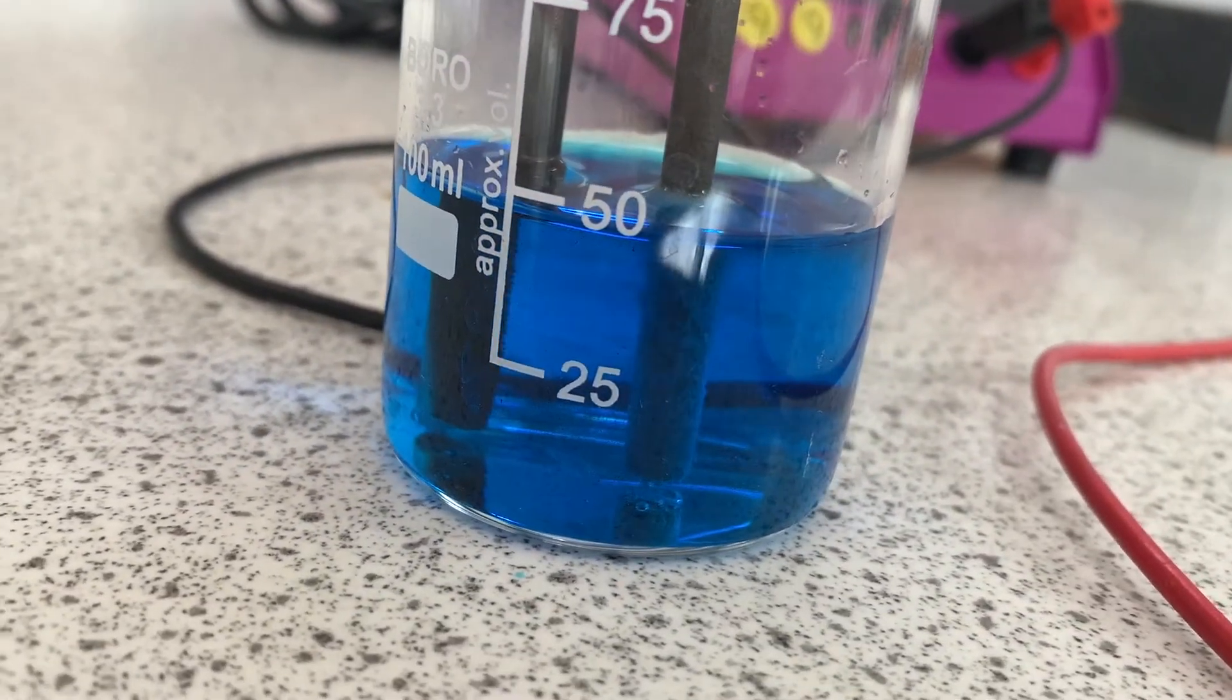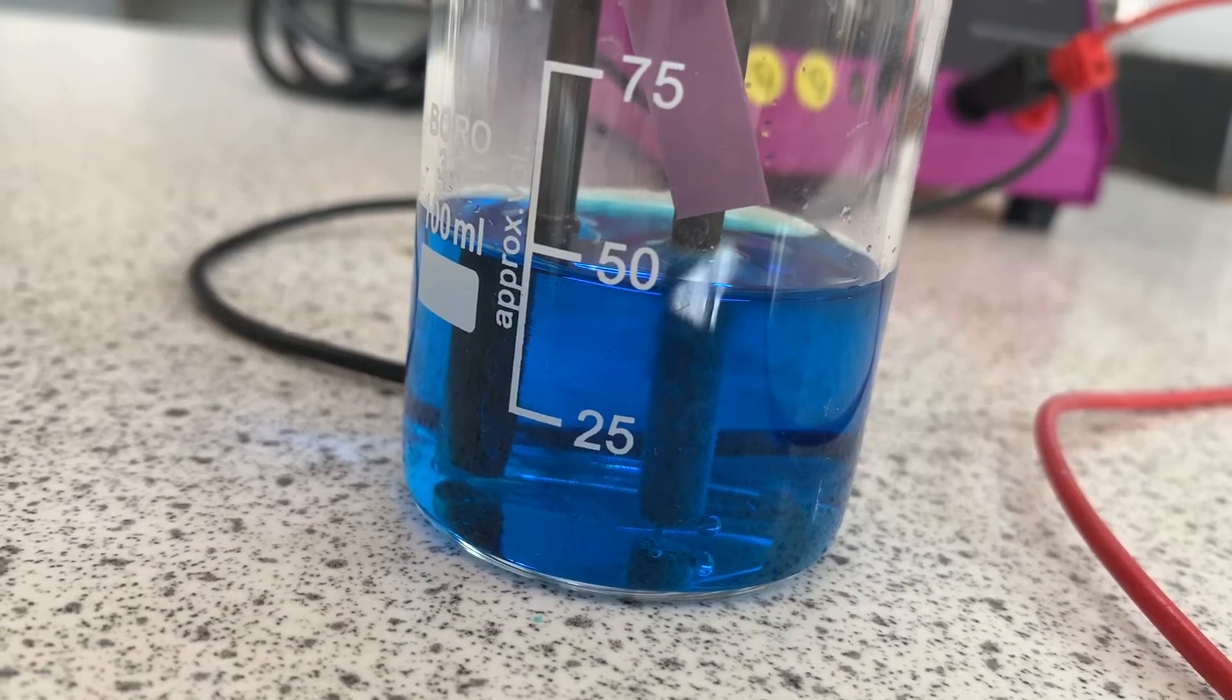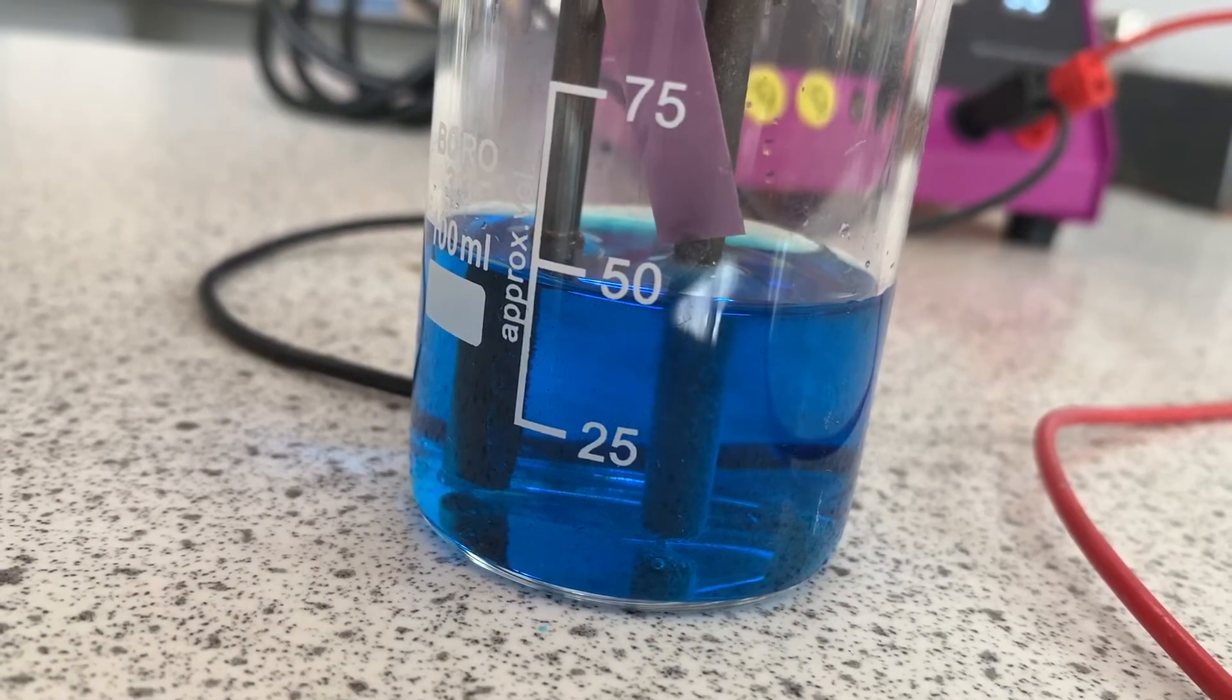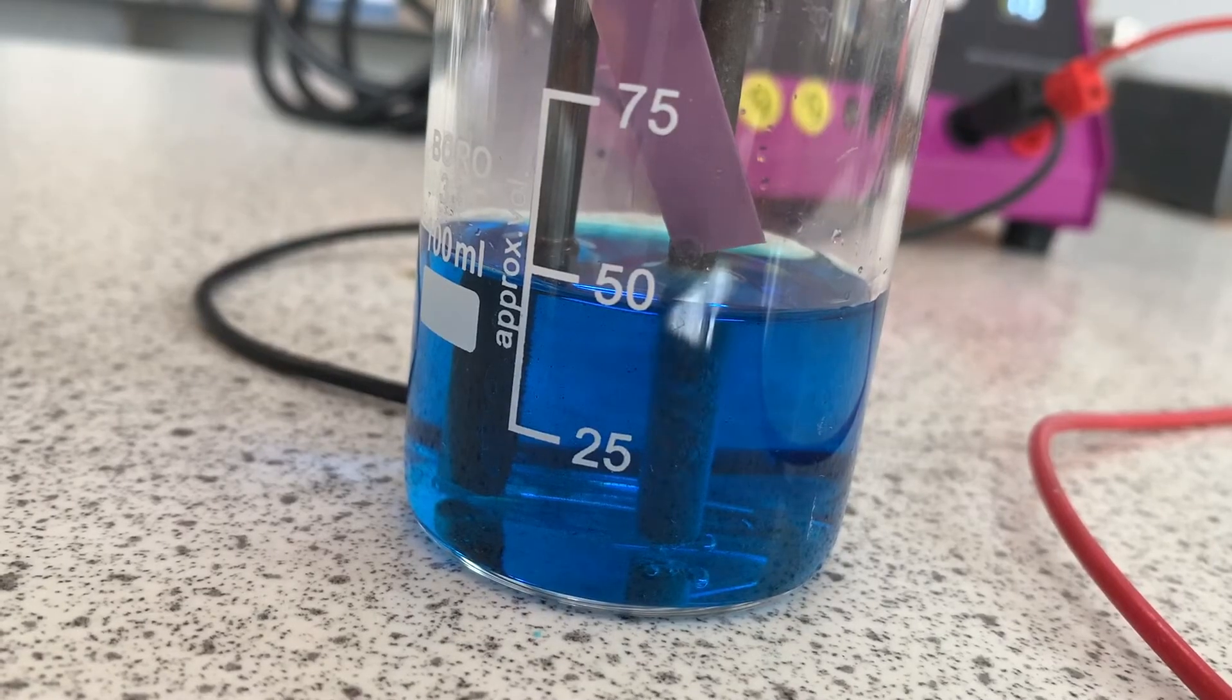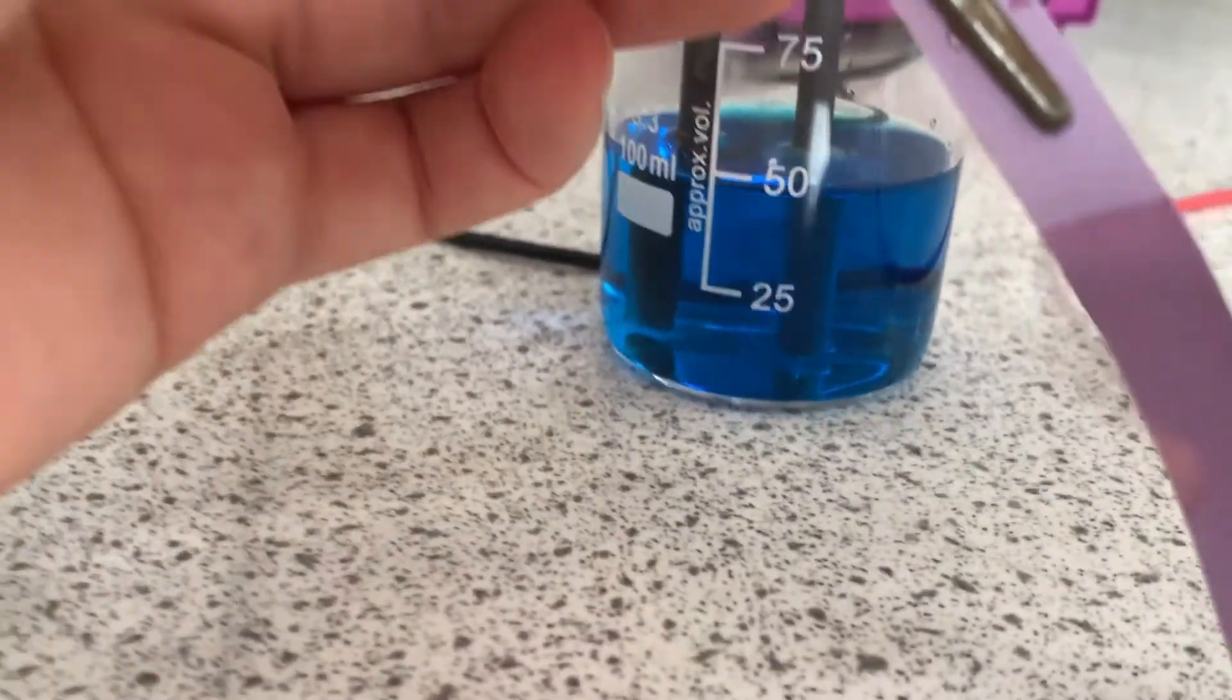Again, there is fizzing at the positive electrode indicating a gas is being given off. This time damp blue litmus paper is unchanged in colour.